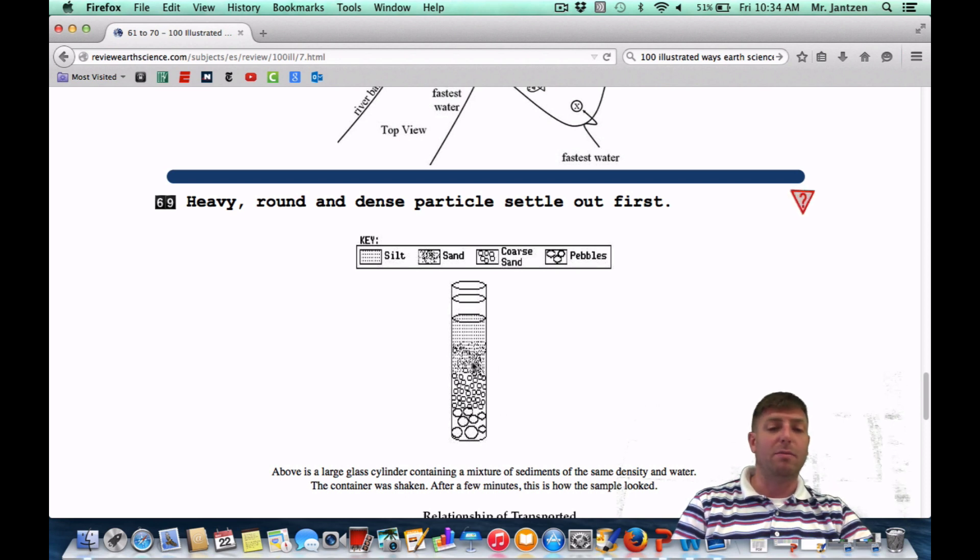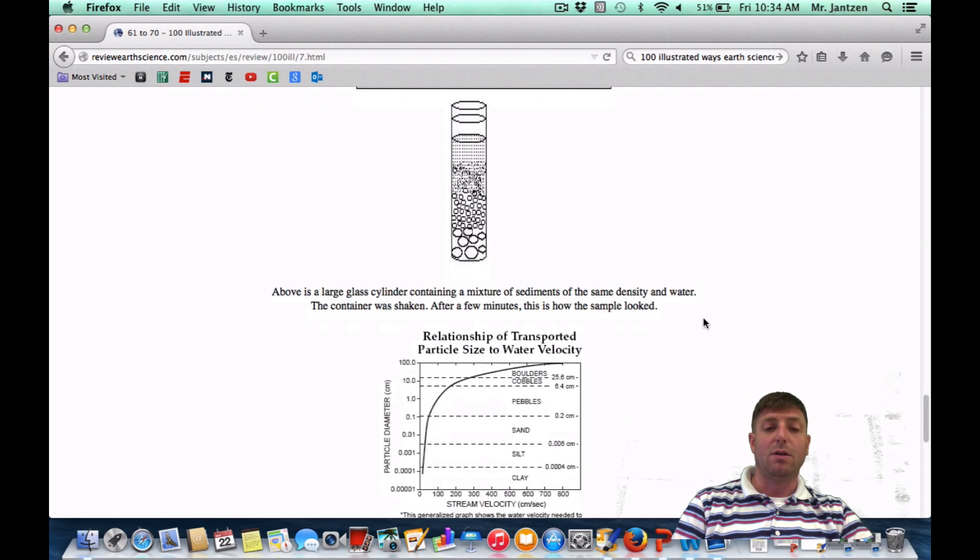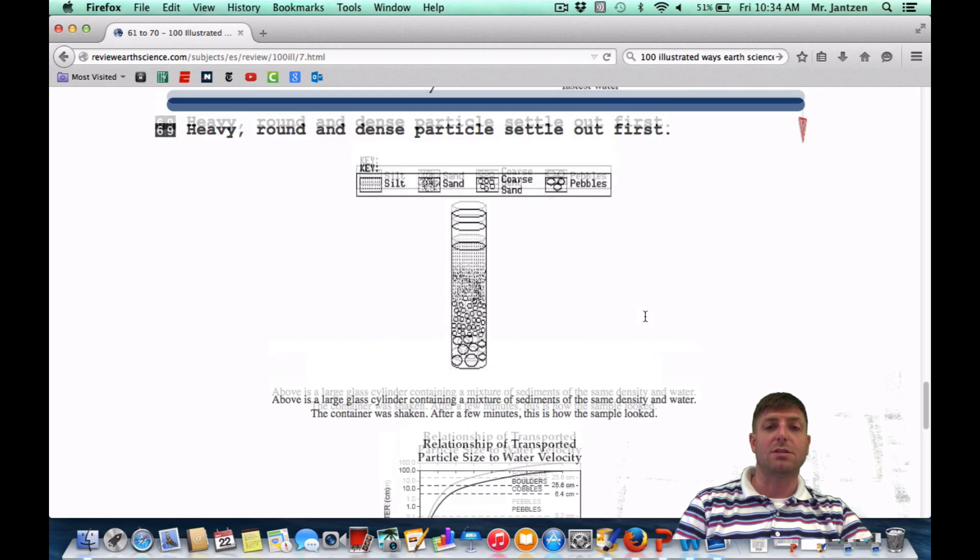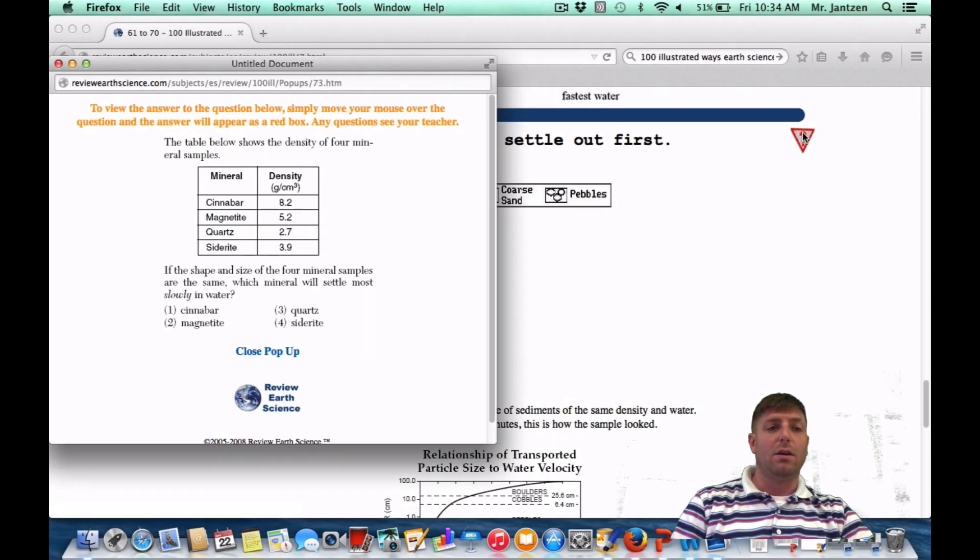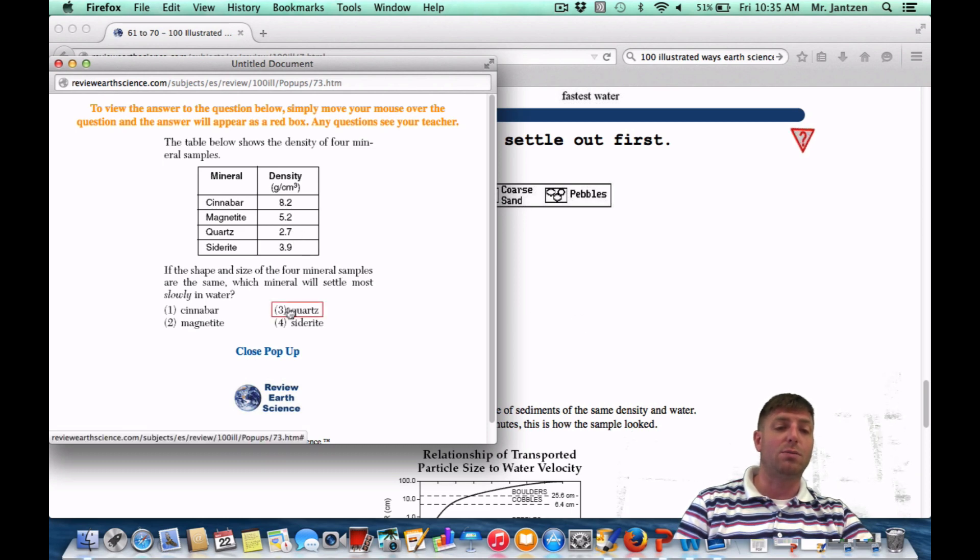You can kind of use your reference tables here to kind of see what's going on. The table below shows the density of four mineral samples. If the shape and size of the four mineral samples are the same, which mineral will settle most slowly in water? Most slowly means it's going to go down the slowest, so it's going to have the least density. So we're talking about quartz here, or 2.7.